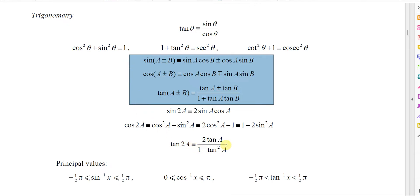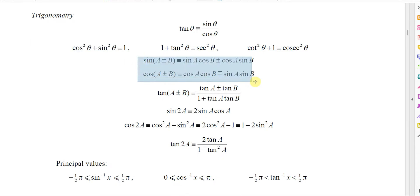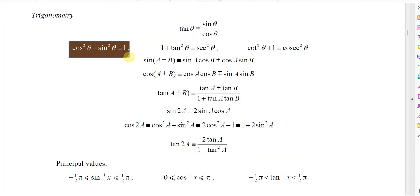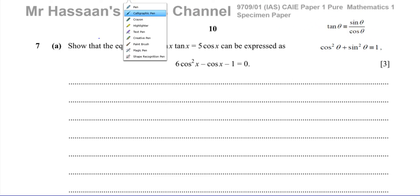Everything else won't be given to you. You're expected to know the rest by using these two to derive them. These two formulas can also be used to derive the double angle formulae. Don't worry about that if you're taking just P1. The only things you're concerned with are these first two, and in Cambridge you don't actually have to memorize them as they're given on the formula sheet.